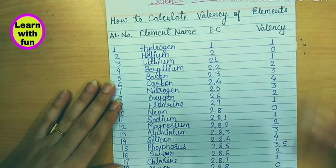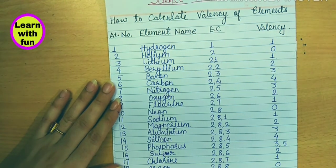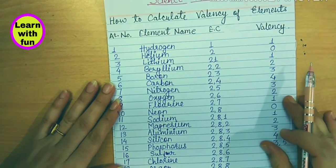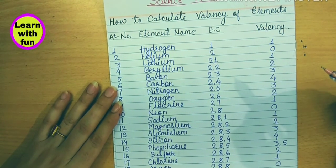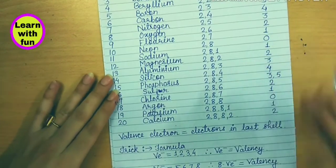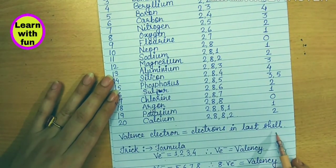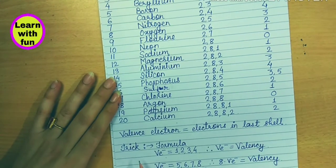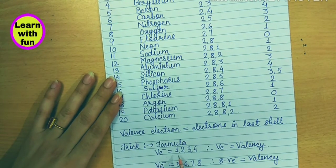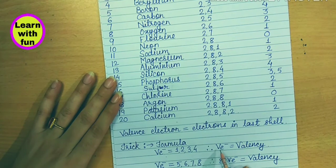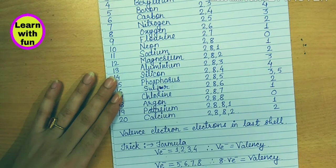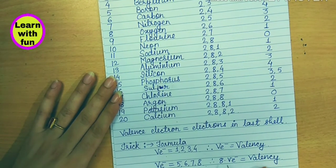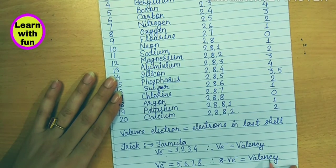Electronic configuration is the distribution of electrons in the shells. Valency is the combining capacity of the elements to form chemical bonds. Valence electrons are the electrons in the last shell. The formula we are using: if the valence electron is 1, 2, 3, or 4, then valence electron equals valency. If the outermost electron is 5, 6, 7, or 8, then the formula will be 8 minus valence electron equals valency.